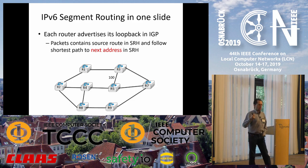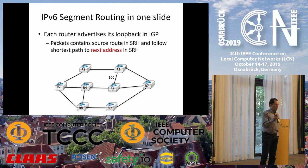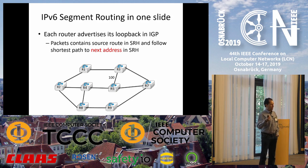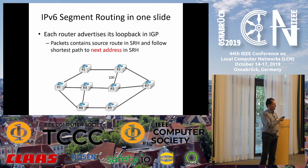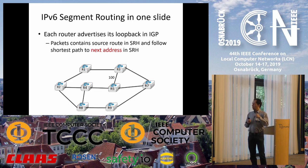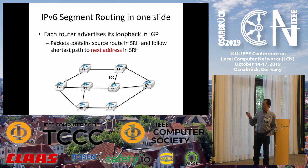IPv6 segment routing is a new flavor of a very old technology — it is the return of source routing. If you remember the early days of networks, there was source routing for IPv4, but it was killed because of security issues. It came back in IPv6 and in a revision of MPLS with a variant called segment routing.